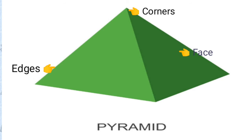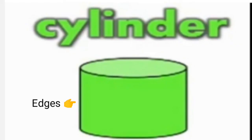Our next figure is cylinder. Our cylinder has 2 edges, 3 faces but no corners.